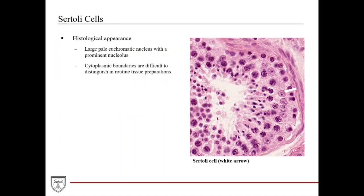Inhibin provides negative feedback inhibition to GnRH release from the hypothalamus, which stimulates FSH secretion from the anterior pituitary, as well as inhibiting FSH secretion itself from the anterior pituitary. Activin, on the other hand, provides positive feedback to FSH secretion from the anterior pituitary. Histologically, Sertoli cells have a large pale euchromatic nucleus with a prominent nucleolus, as you can see here indicated by the arrow. The boundaries of the cytoplasm are difficult to differentiate, so use the nucleus to help identify the cell.